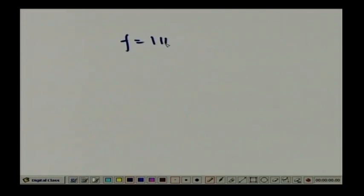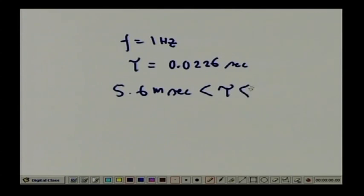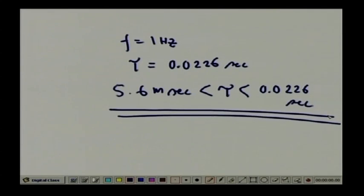Similarly, for f = 1 Hz, we get τ = 0.0226 seconds. Therefore, the time constant τ should lie between 5.6 milliseconds and 0.0226 seconds. If τ lies within this range, the first-order instrument can handle signals between 1 Hz and 4 Hz.